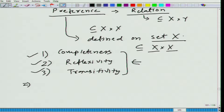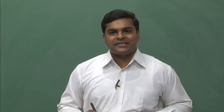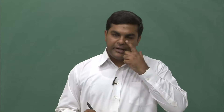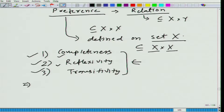To satisfy rationality in economics, when I say that Mr. X has rational preferences — or in short, Mr. X is rational — what do we mean? We mean that Mr. X's preferences satisfy completeness, reflexivity, and transitivity axioms. These lead to rationality.